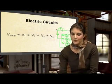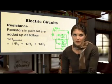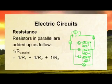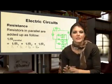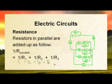For resistance in a parallel circuit, we use a specific formula: 1 over R parallel equals 1 over R1 plus 1 over R2 plus 1 over R3. For example, with resistors of 1 ohm, 2 ohm and 3 ohm: 1 over 1 plus 1 over 2 plus 1 over 3 gives us 11 over 6. But this is not the final answer — you still need to invert it back, so R parallel equals 6 over 11, which gives us 0.55 ohms.